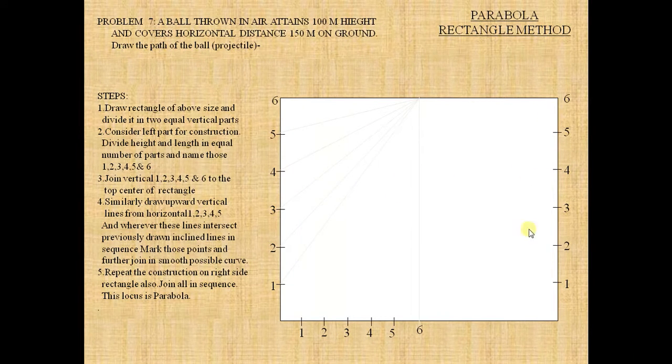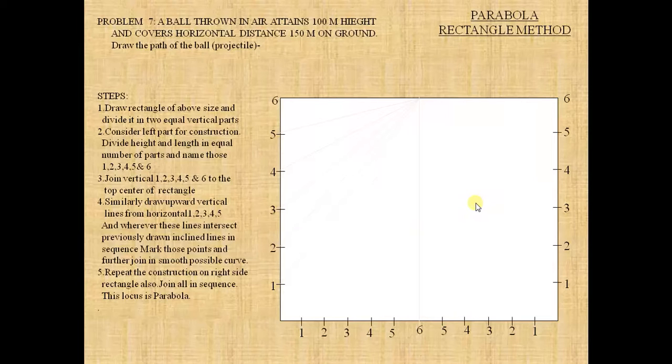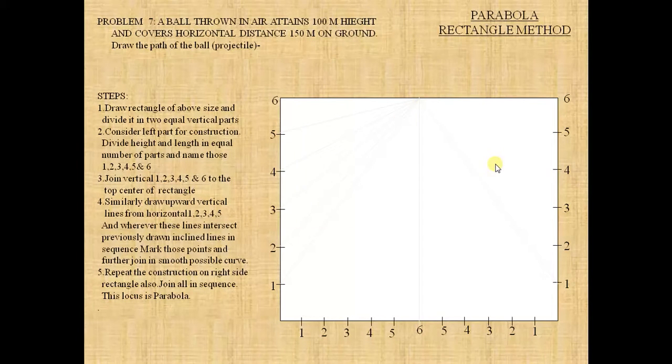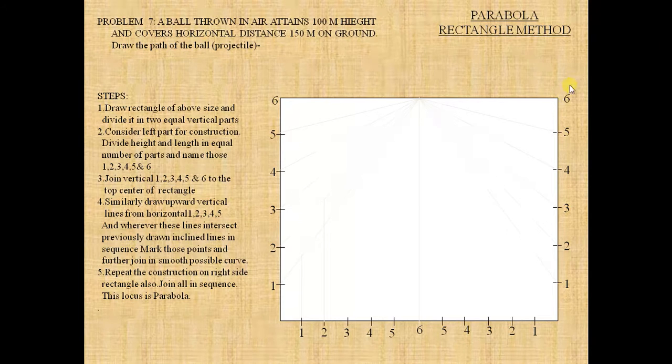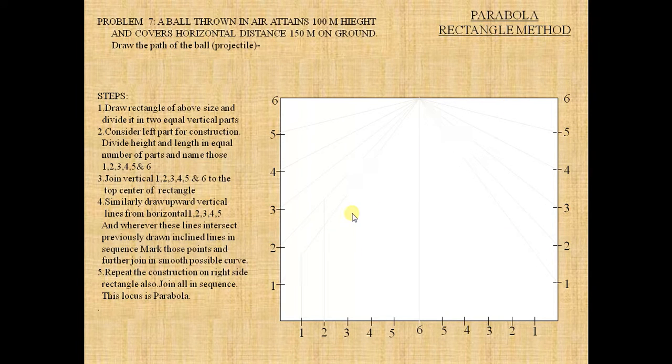So, divide it into six parts and the base also six parts. See, as the left side, we must join the one to the edge, two to the edge point, three to the edge point, up to six at the edge. See, the sixth edge was not needed because there was already a line built here.